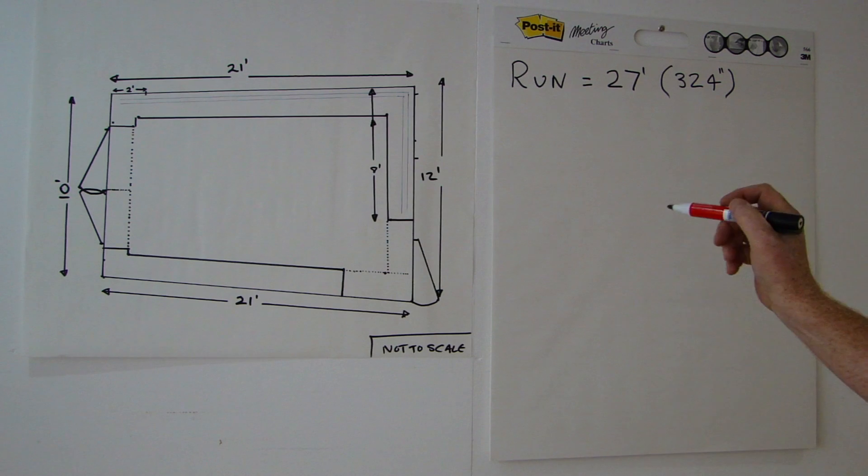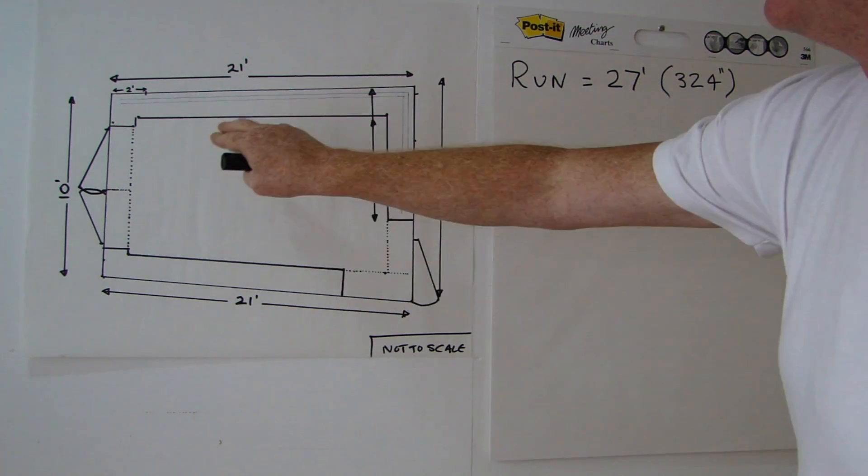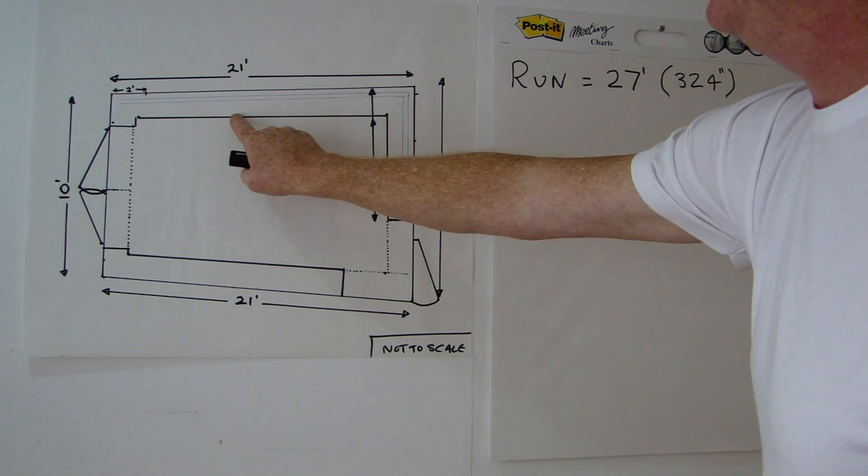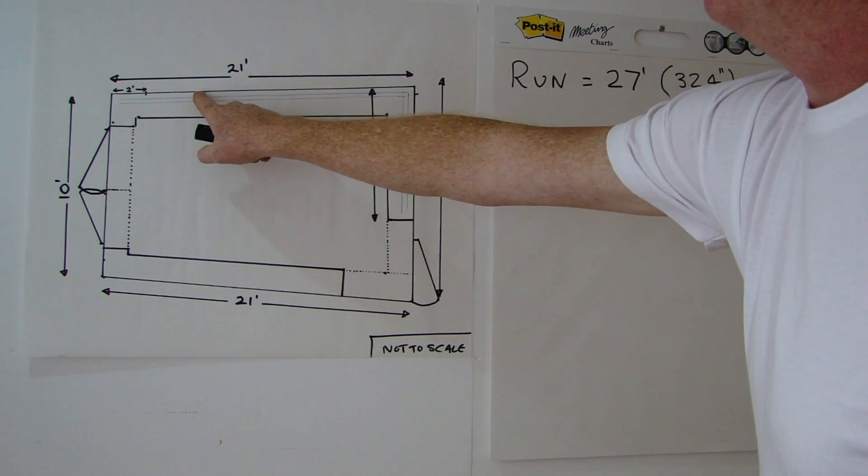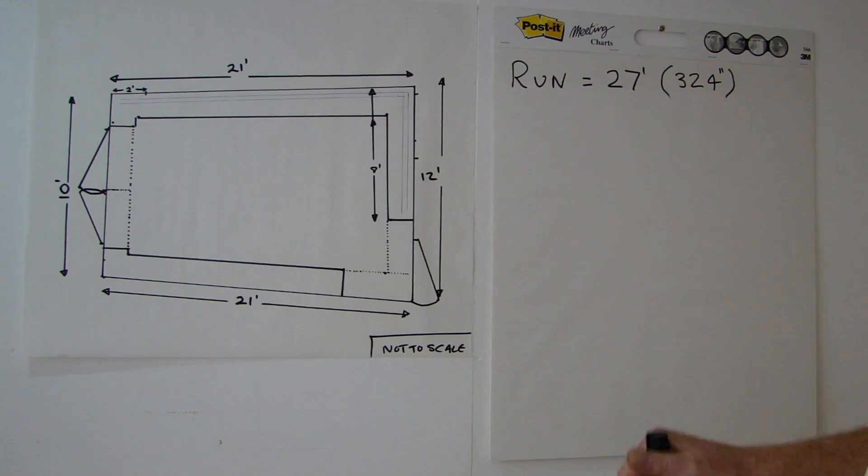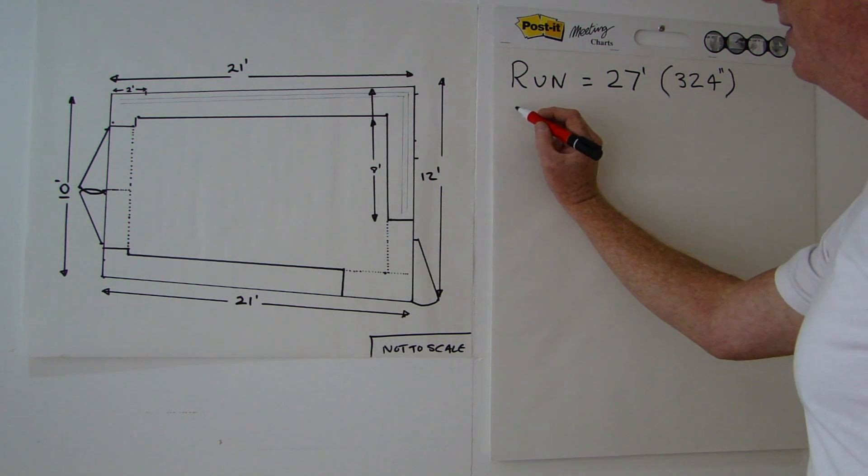The next thing we need is the rise. That's the height from the bottom of the fiddle yard base to the top of the main baseboards, which I've already done, and that is 8.5 inches.